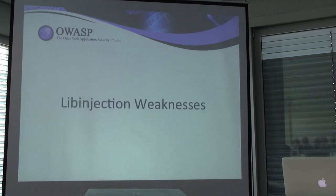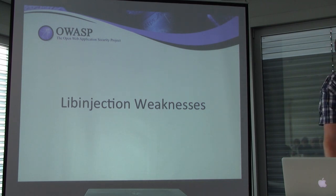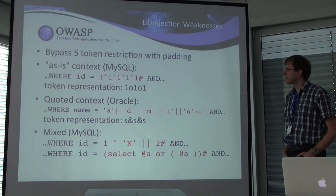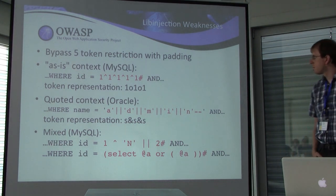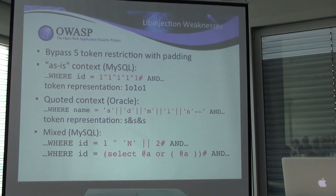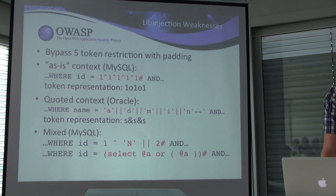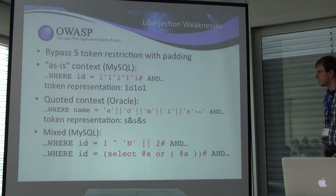Coming to the weaknesses of lib injection — this is my personal opinion. I know there are already a few web application firewalls using this library. One problem with lib injection is the five-token limitation. Can it be bypassed? Yes, it can. For example, you add some padding string like '1 XOR 1 XOR 1' and so on. With this padding string, you can basically hide your real attack. The real attack in this case is the command symbol — it could also be a semicolon where you start a new command. There is also injection possible in a quoted context where you can use the concatenation symbol to circumvent the filter.